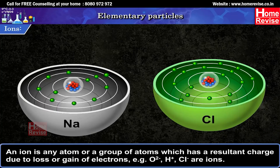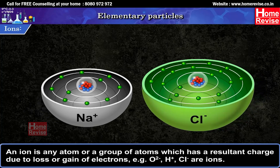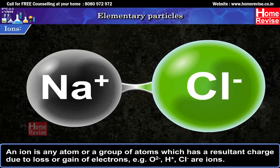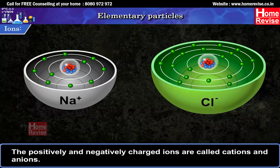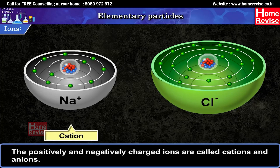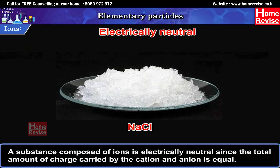The ratio of molecular mass of a substance to that of an atom of carbon is known as the relative molecular mass of the substance. Ions: An ion is any atom or group of atoms which has a resultant charge due to loss or gain of electrons. Examples: O2⁻, H⁺, Cl⁻ are ions. The positively and negatively charged ions are called cations and anions. A substance composed of ions is electrically neutral since the total amount of charge carried by the cation and anion is equal.